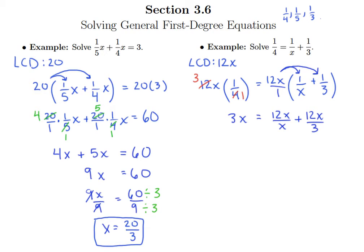So now we can do some more reducing. Here my x's cancel and that's really important because we don't want any x's hanging around in the denominator of a fraction. And here 12 divided by 3 is 4. 3 divided by 3 is 1. So when this whole thing cleans up I have an equation with no fractions at all. 3x equals 12 plus 4x.